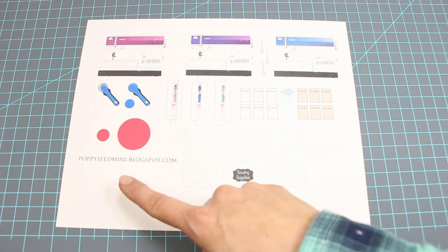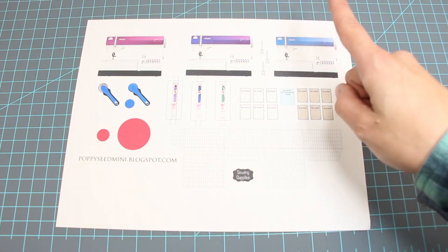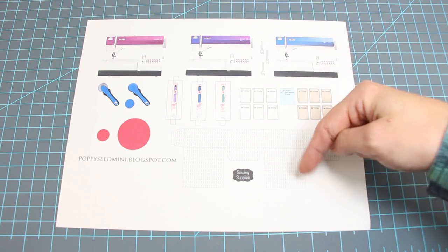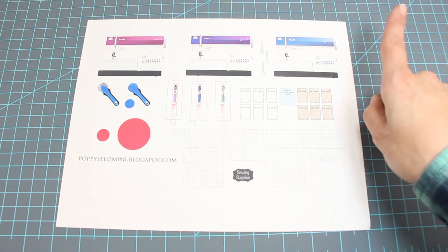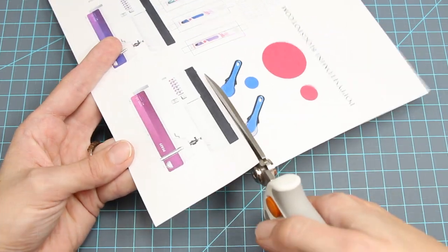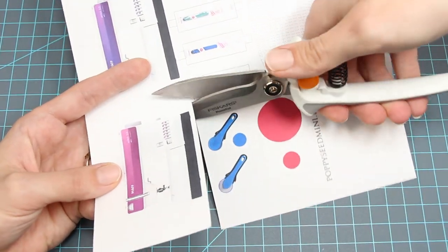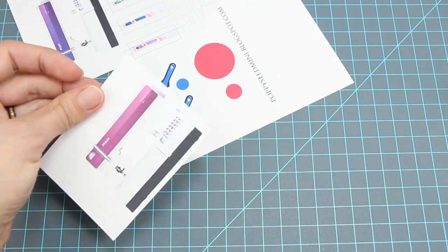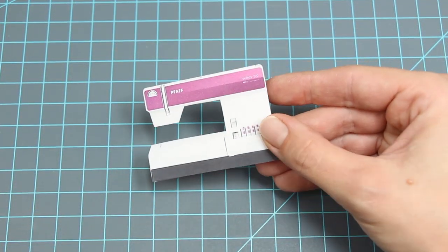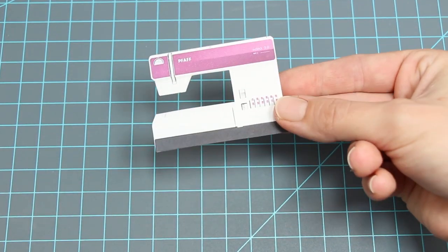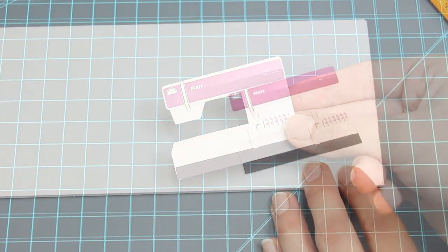To get the printable for this project, go to poppyseedmini.blogspot.com. The link is in the description box below. I printed mine on cardstock. Let's start with the sewing machine. First, pick out the color you like and cut it out. I designed this to match my favorite sewing machine. I'm definitely a Pfaff lover.